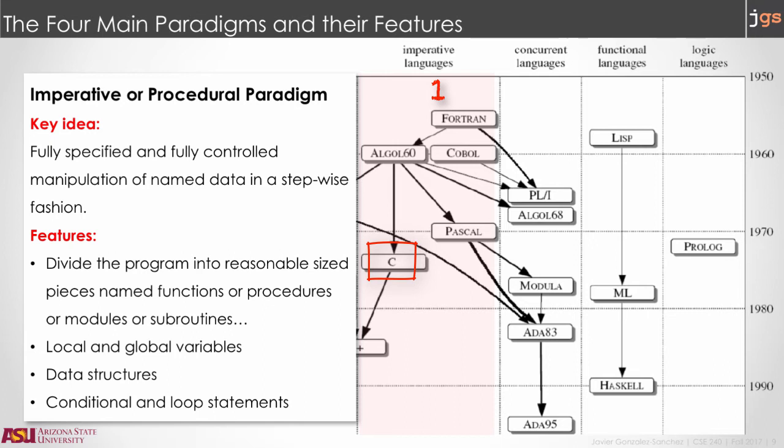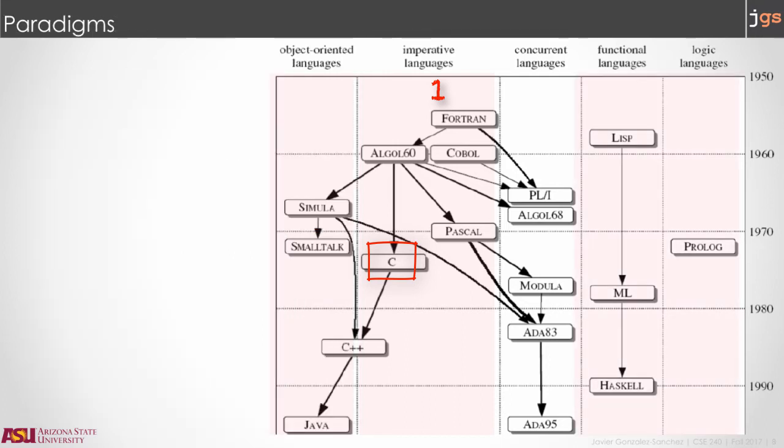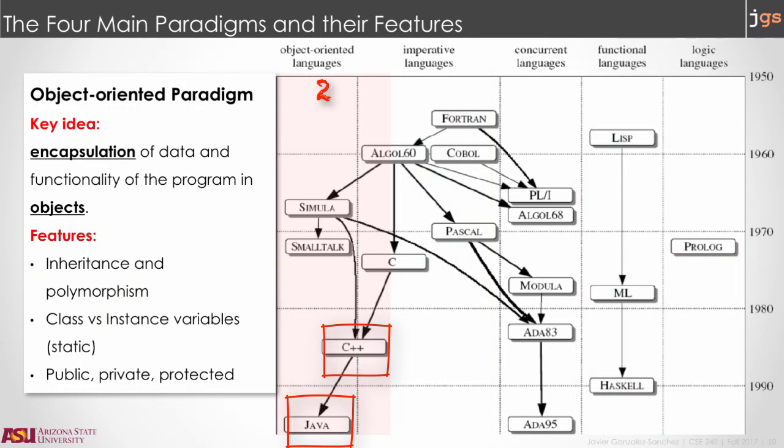Imperative languages are ancestors of object-oriented languages, as you can see in the slide. Therefore, all these features are also included in object-oriented languages. They should be familiar for you. Additionally, the object-oriented paradigm defines as a key idea the encapsulation of data and functionality in classes and objects. Classes and objects introduce new features in programming, such as inheritance, polymorphism, static and non-static data, and public, private, and protected scope. You already know classes and objects. We're going to review the other features in the following weeks.